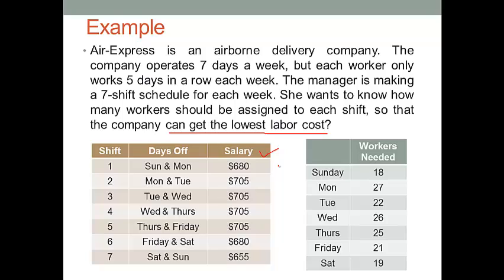The number of workers assigned to different shifts can only be integers — we cannot have 1.5 workers in shift 1 or 3.2 workers in shift 2. Those real numbers don't make sense. We can only have whole numbers like 2 workers in shift 1 or 3 workers in shift 2. This is why we call this an integer optimization analysis — the values for decision variables can only be integers. I'll show you how to specify this requirement in Excel later.